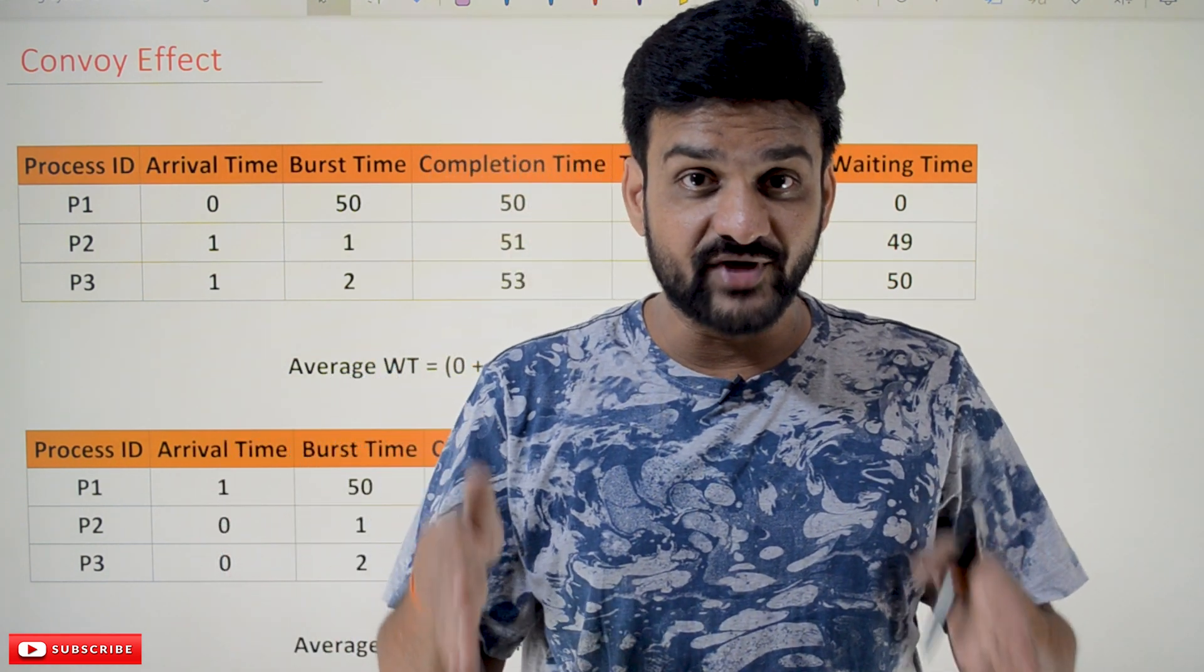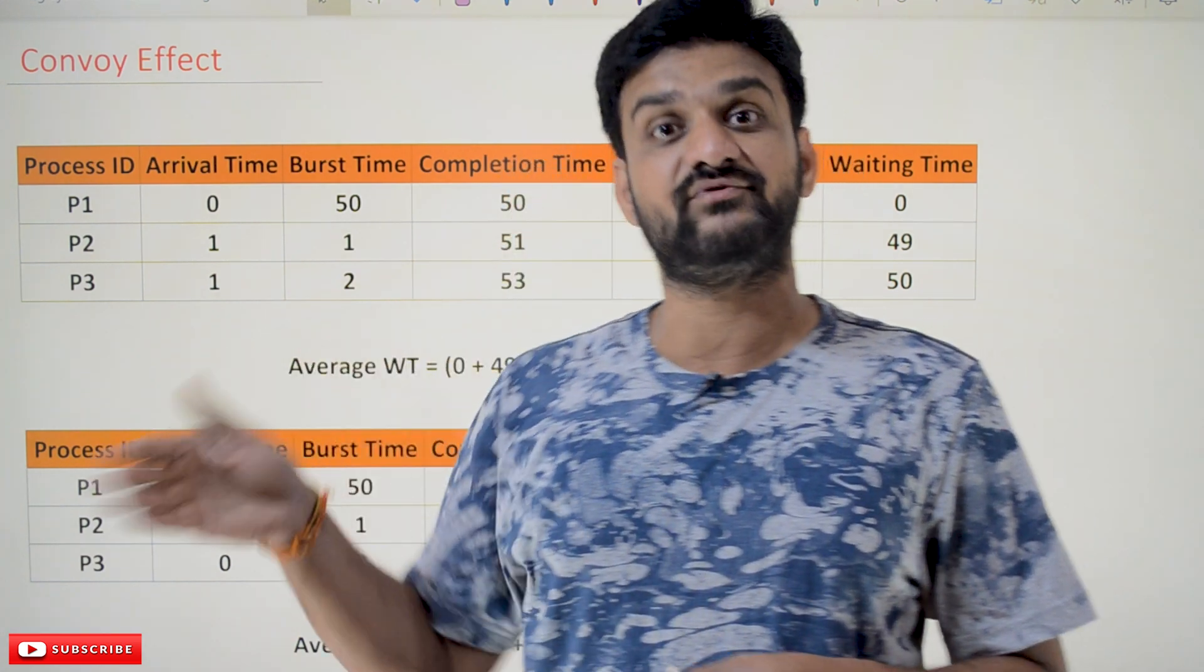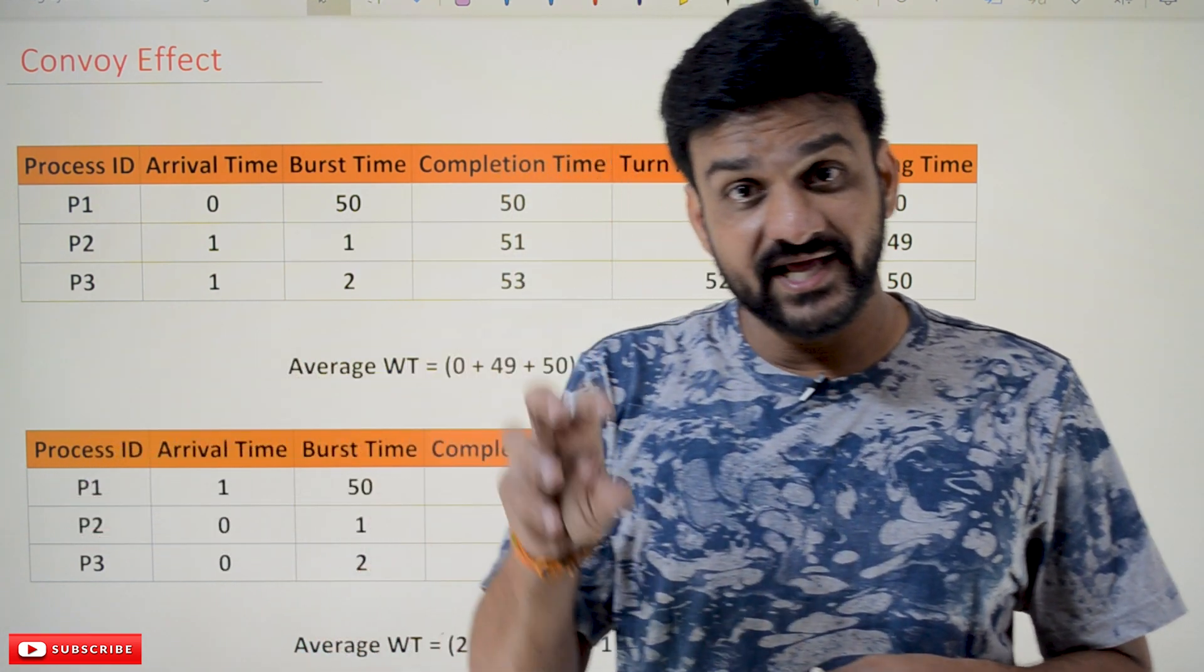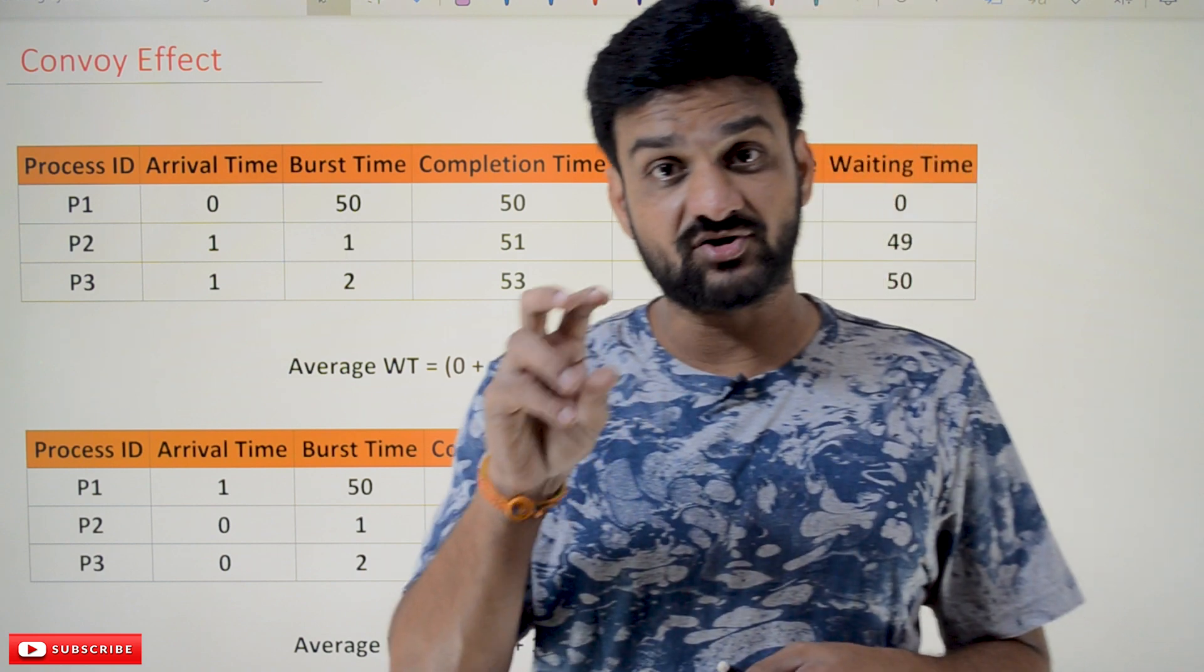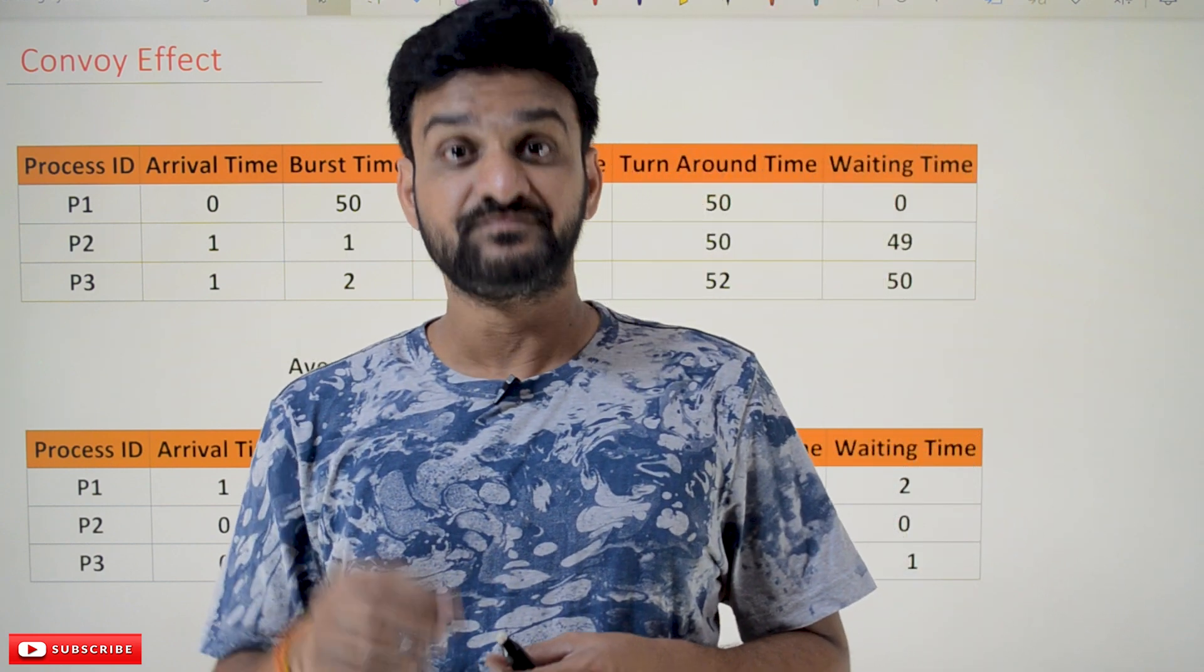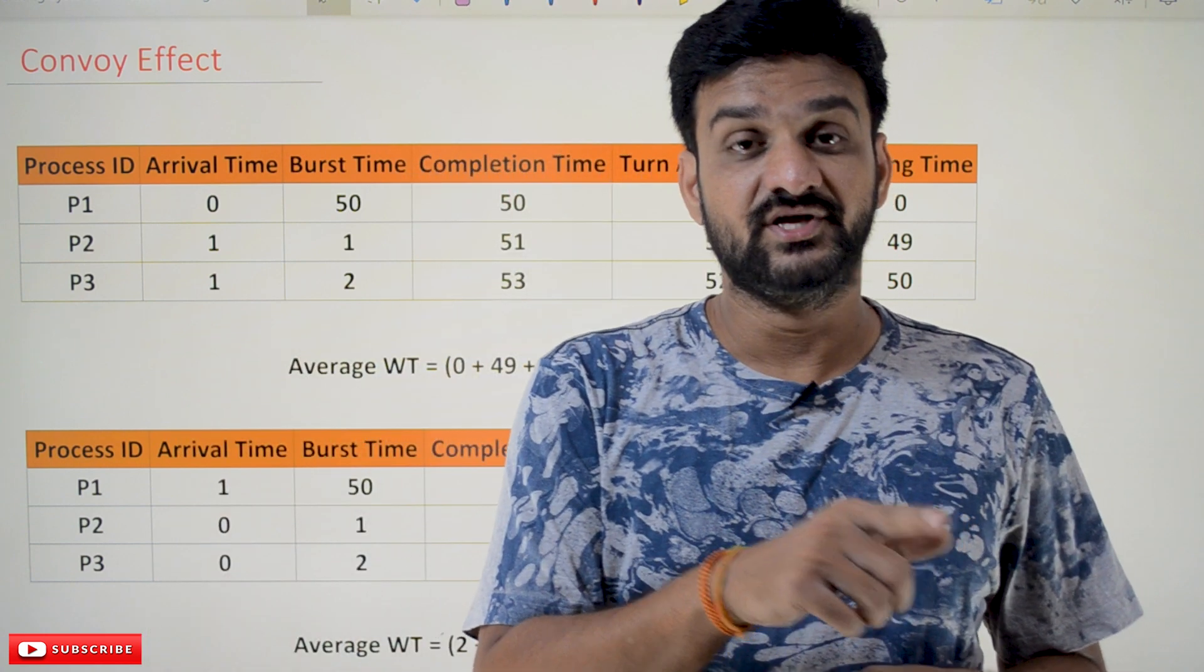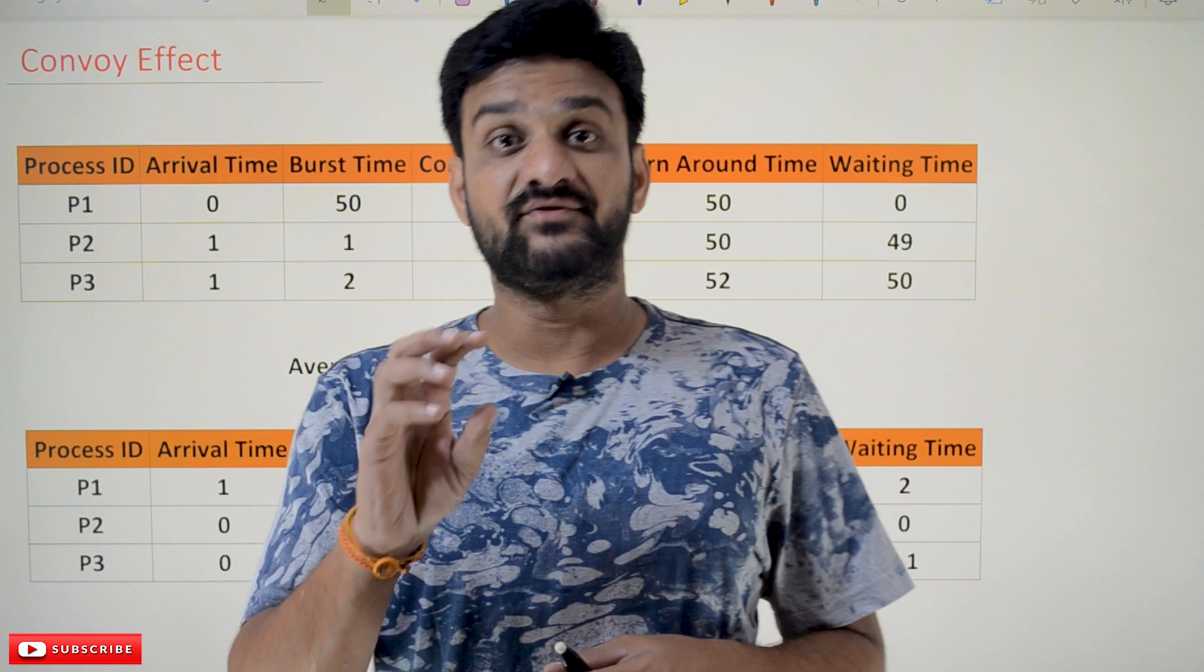What happens with this is all the people have to wait until that entire convoy has passed. So there is a delay in our daily routine. With that convoy, we are going to have a delay in our daily routine. This is what is going to happen in first-come-first-serve.